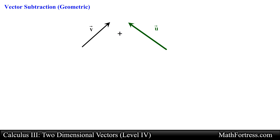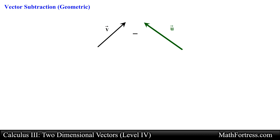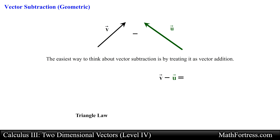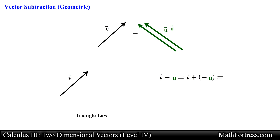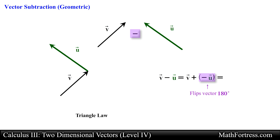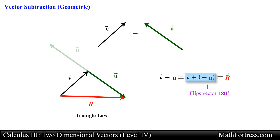Now let's move along to vector subtraction. Computationally, subtraction of vectors is very similar to vector addition. We can geometrically find the difference of two vectors by making use of the triangle law. Say we want to find vector V minus vector U. The easiest way to think about vector subtraction is by treating it as a vector addition problem — we want to find vector V plus negative vector U. So we take vector U and align its initial point with the tip of vector V. In the case of vector subtraction we take the negative of vector U, recalling that a negative scalar flips the vector in the opposite direction. We change the direction of vector U and define vector V plus negative vector U as the vector whose initial point coincides with the initial point of vector V and extends to the terminal point of negative vector U.